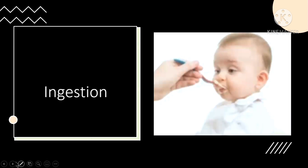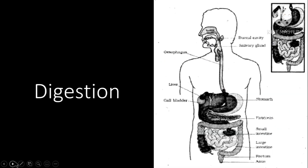What is digestion? The breakdown of complex components of food into simpler substances is called digestion. Partial digestion takes place in the stomach, and complete digestion takes place in the intestines. You have two intestines: small intestine and large intestine.